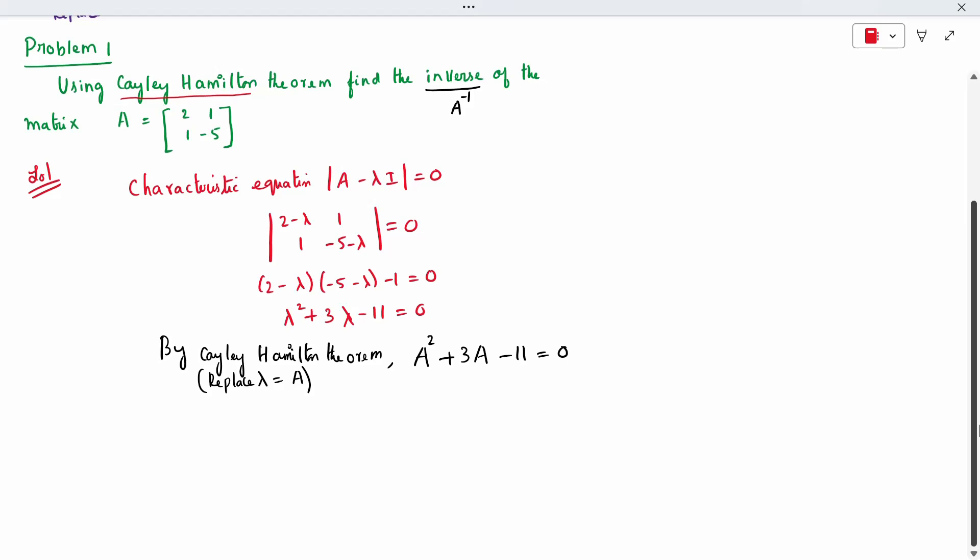Multiply the given equation by A inverse throughout this equation. When I multiply A inverse, it is A plus 3, minus 11 A inverse. I have not done anything. I have multiplied this equation by A inverse. One equation I am multiplying by A inverse. I have got this equation.